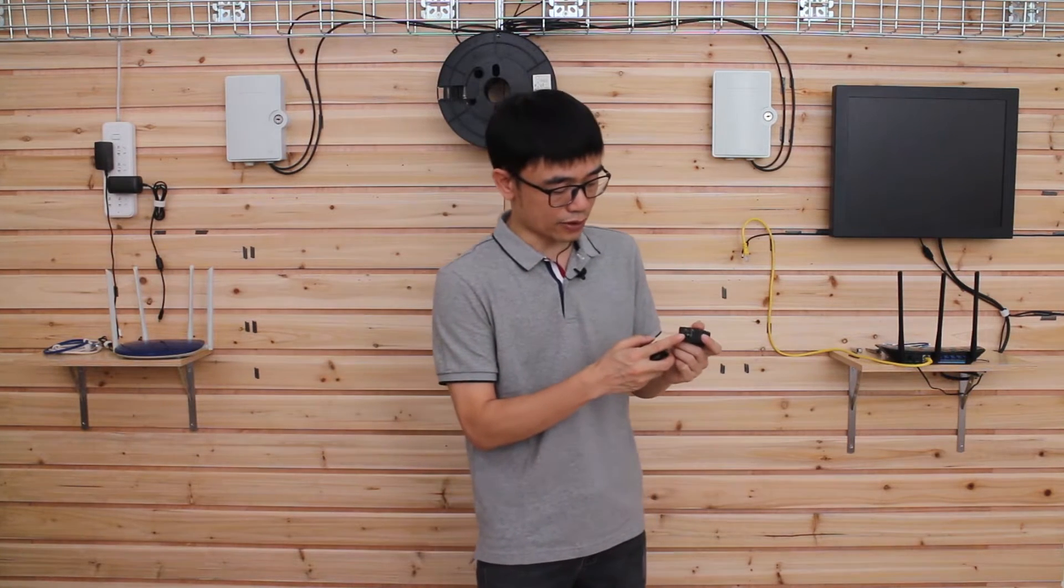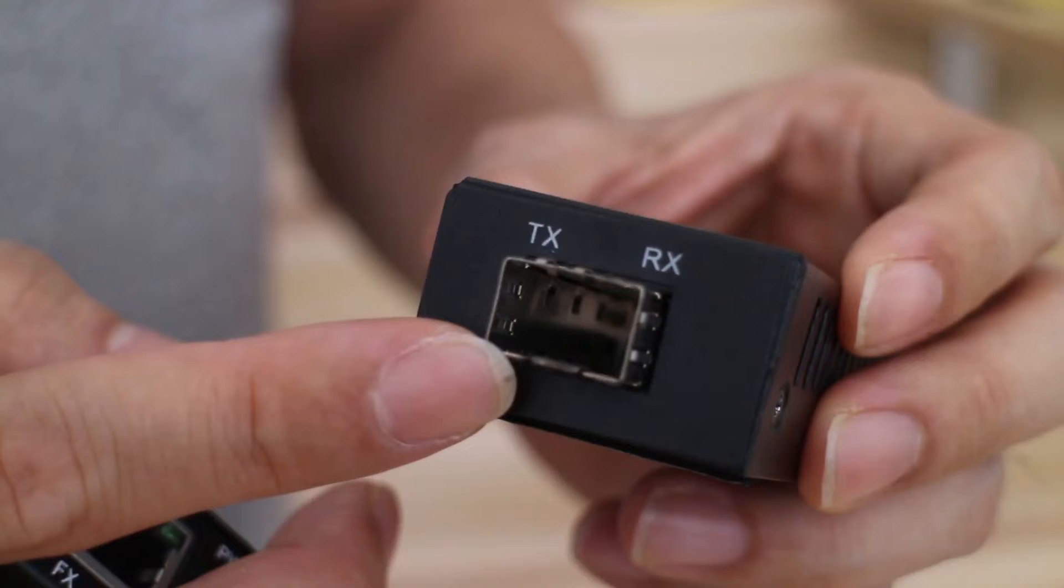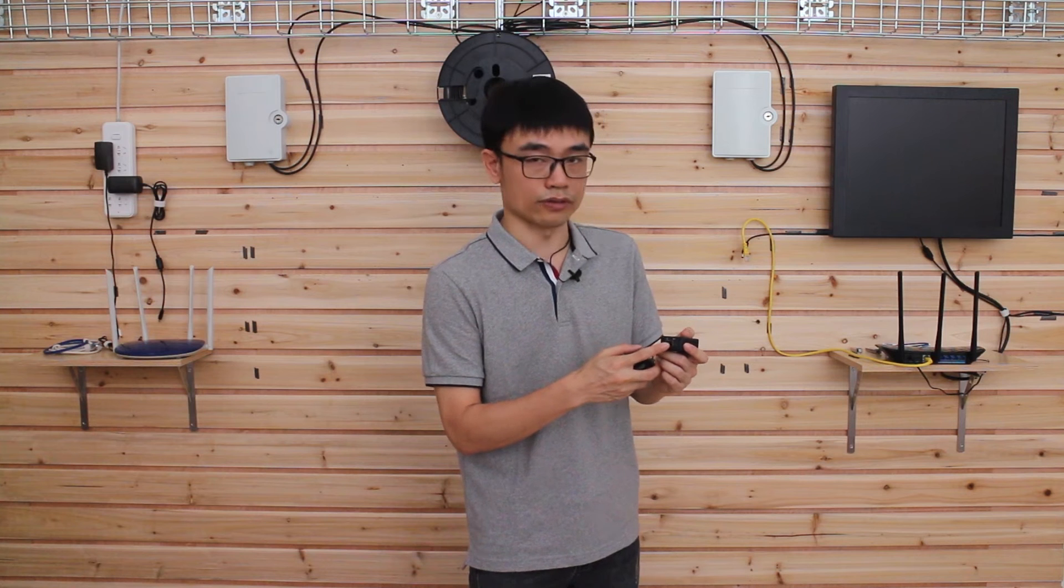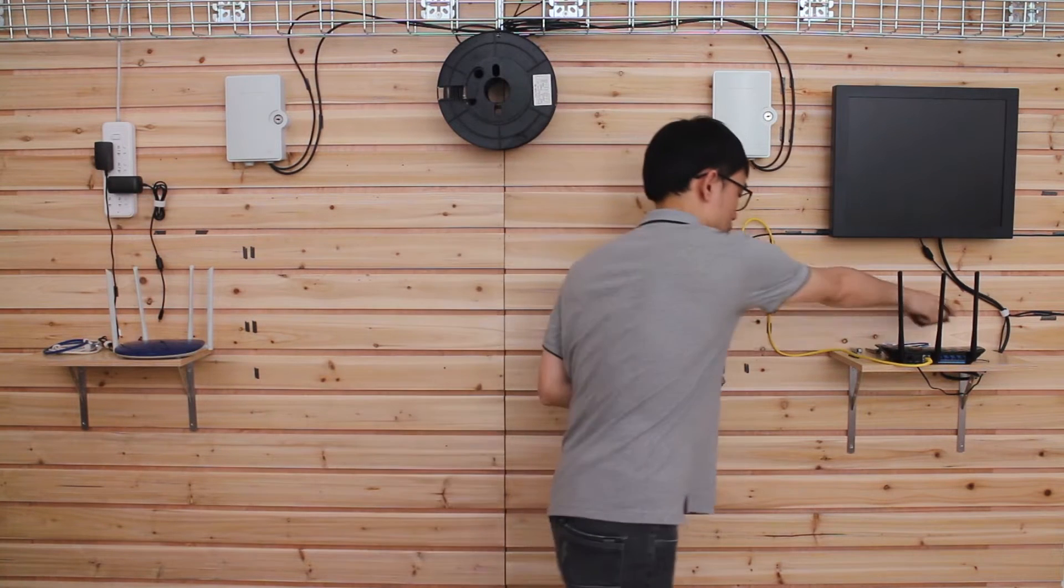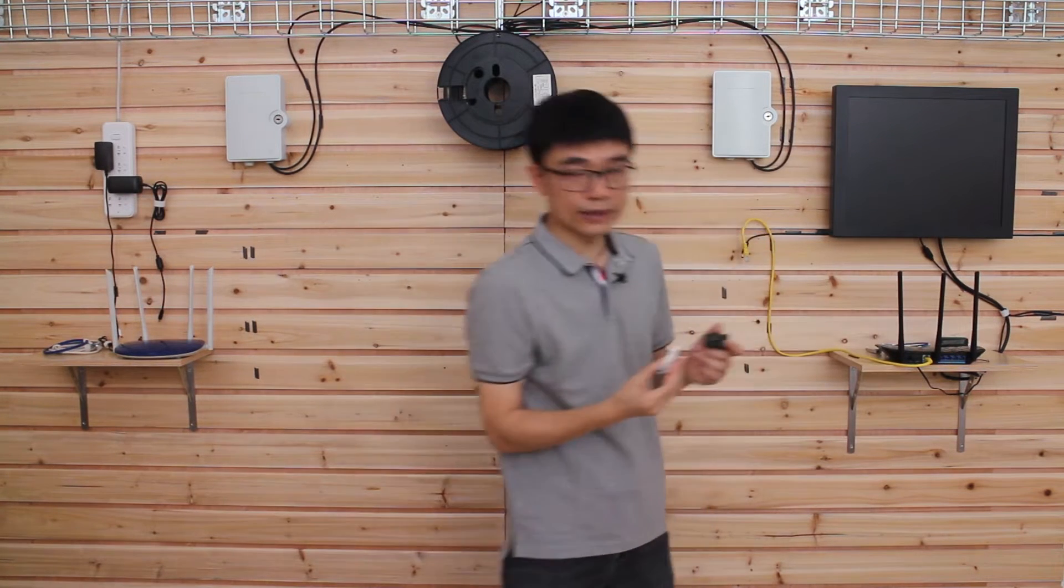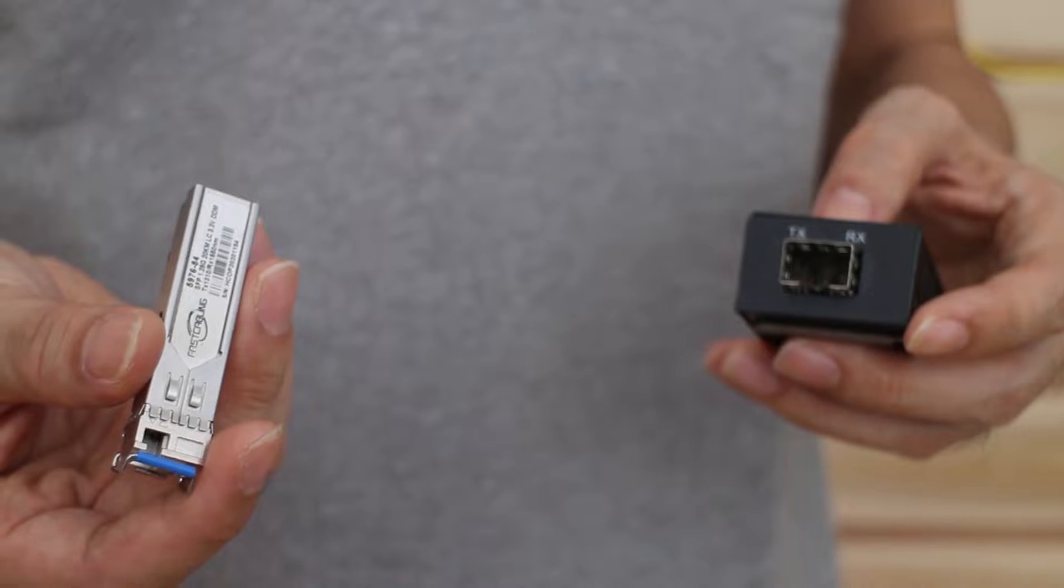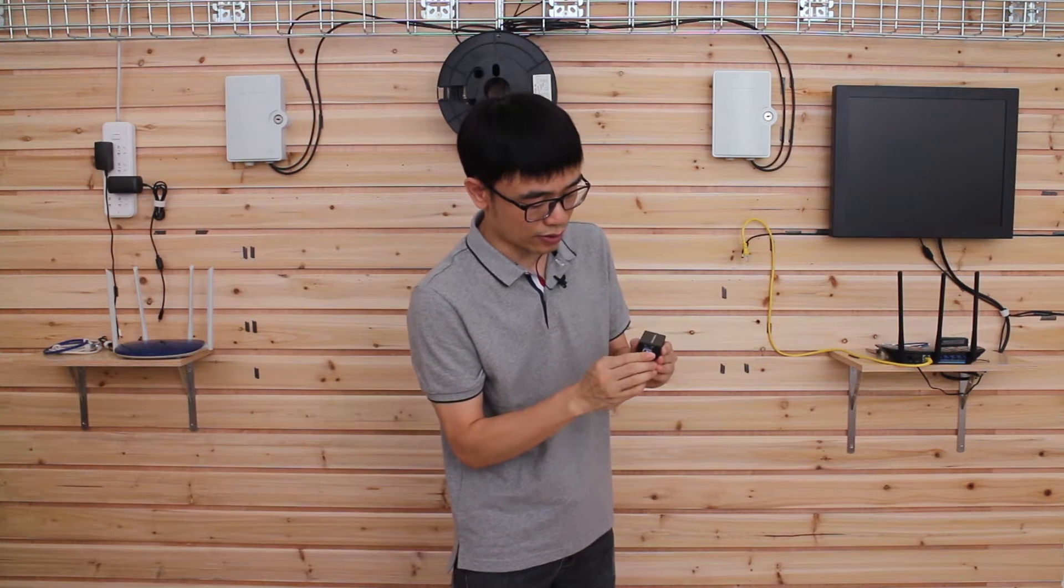This is the SFP slot. You can see it's empty. We still cannot connect the fiber optic cable to this slot directly. So the second component is the SFP transceiver. This is the SFP transceiver. Now I can insert the SFP transceiver to the slot.